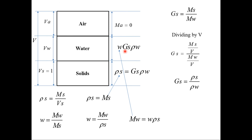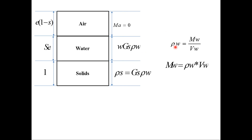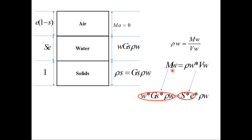Density of water equals mass of water divided by volume of water, so mass of water equals density of water multiplied by volume of water. Since volume of water equals S times e, and equating the two expressions for mass of water: water content times specific gravity times density of water equals density of water times S times e. The density of water cancels, giving the fundamental relation: S·e = w·G, where S is degree of saturation, e is void ratio, w is water content, and G is specific gravity.